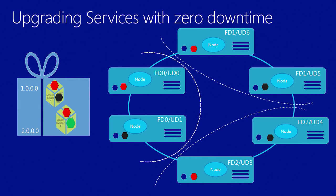Let's first take a look at how this actually works under the hood before I show you a demo. Here we have a Service Fabric application version 1.0 which contains two microservices shown in red and black, which is what is running across the Service Fabric cluster. Now we want to upgrade this to version 2.0 of the same application, with the major difference being the microservice shown in black is being upgraded to green.